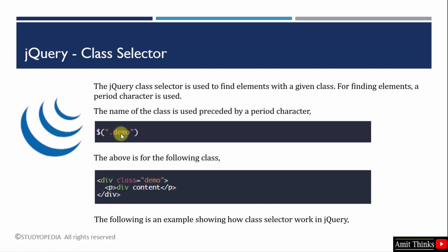We saw how we can work around the id selector using the id attribute to select an element. If you have a div with an id, you can easily access it using the id selector — just mention the hash. That's it. Now let us see the third type of selector — the class selector. It will find elements with a given class. We added id earlier using the id attribute; this will use the class attribute instead. So if your div class is 'demo', use the name of the class preceded by a period character — that means dot.